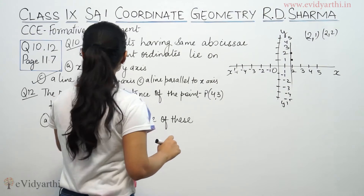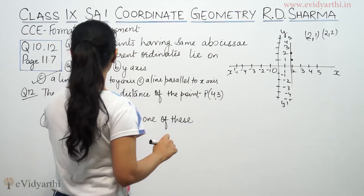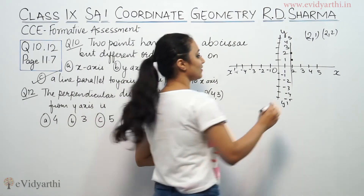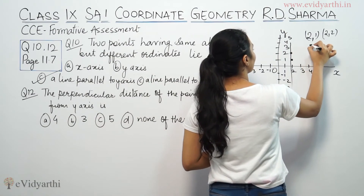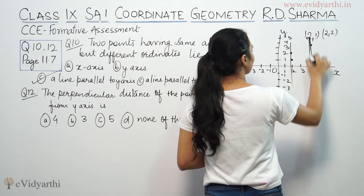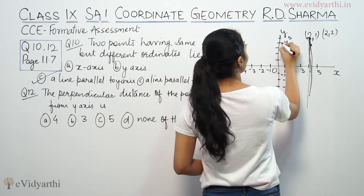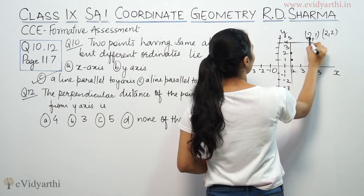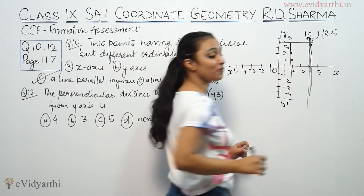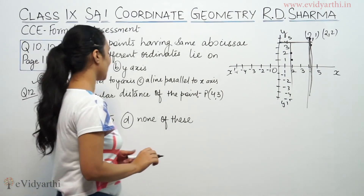The next question: the perpendicular distance of the point (4, 3) from the y-axis. I plot the point — this is 4 on x and 3 on y. The perpendicular distance from this point to the y-axis is simply the x-coordinate, which is 4. So the perpendicular distance is 4.